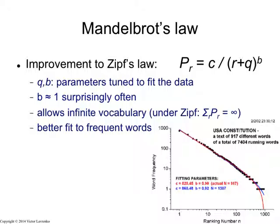So if the goal is really to fit the data accurately — to accurately predict the frequencies for the low-frequency words — then Mandelbrot's Law gives a slightly better fit. To clarify: it's not frequent words, it's rare words that it gives a better fit for.